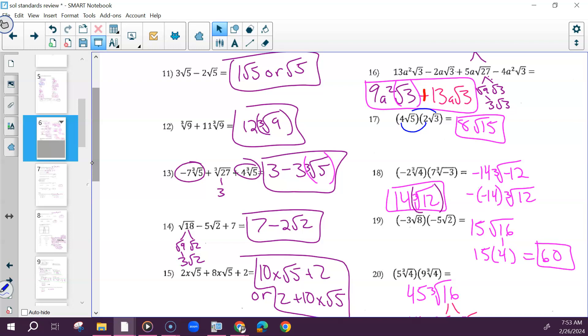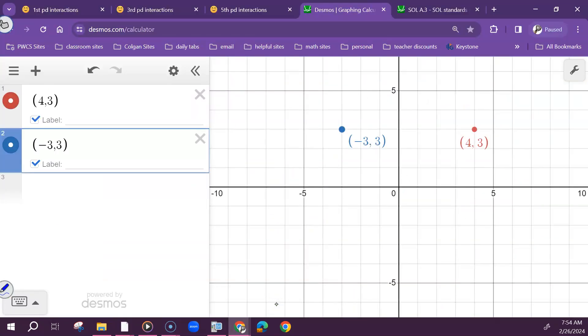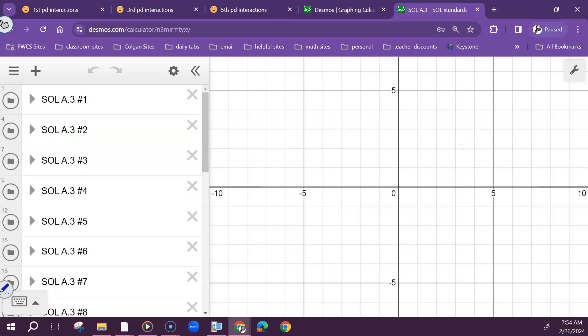So next Monday, these ones are due. A4A and A4B. Those we have done, so you should be able to do all of those, but double check yourself in Desmos. So A4A and A4B.